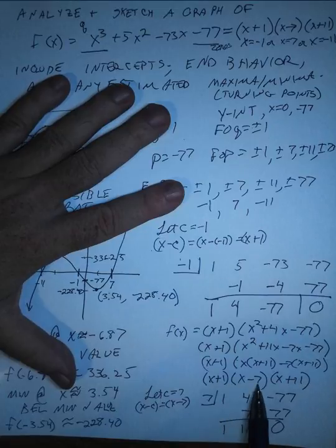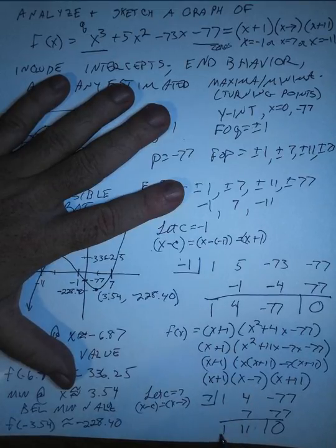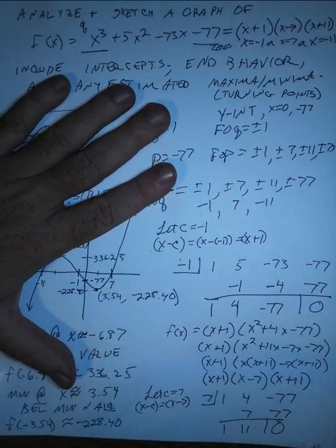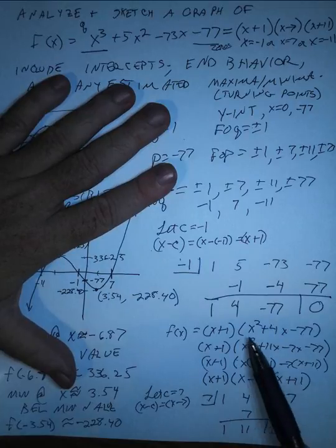And so that shows me that X minus 7 is indeed a factor. And then what's left is X plus 11.